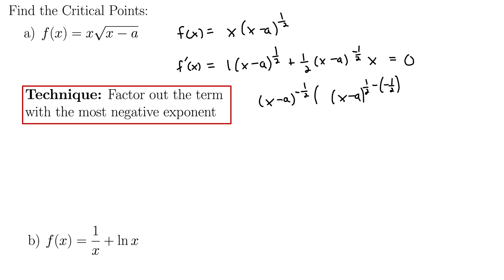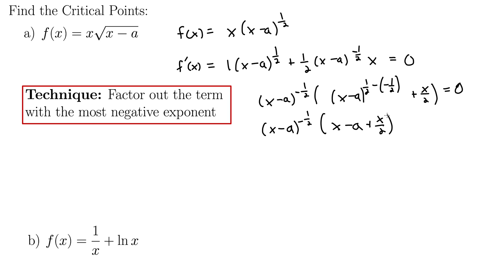Something incredible happens: x minus a to the 1 half minus negative 1 half simplifies to x minus a to the first power. So inside we have x minus a plus x over 2. The whole expression becomes x to the negative 1 half times the quantity x minus a plus x over 2, equals 0, which further simplifies to x to the negative 1 half times 3 halves x minus a equals 0.